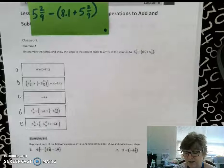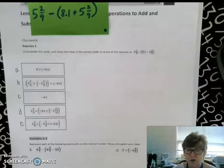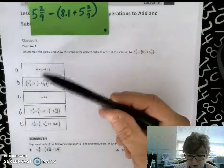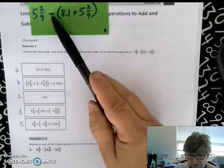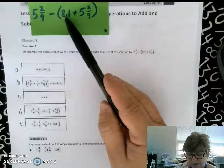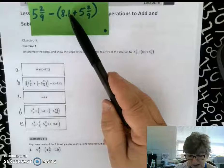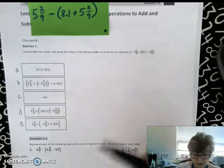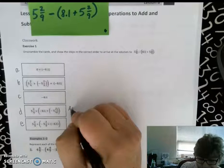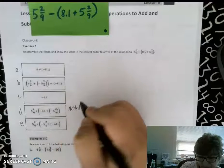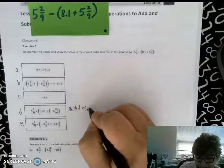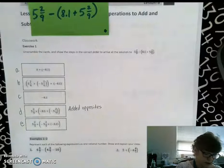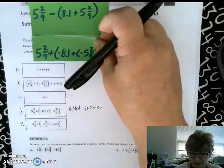Remember our first step is when there is subtraction that we are going to add the opposite. So as I look through to find adding the opposite, adding the opposite of 8 and 1/10th would be adding a negative 8 and 1/10th. As you scan down you will see that on D I have added the opposites and I'm going to list D as my first step.